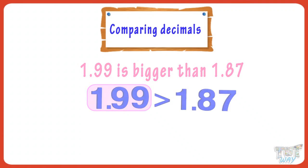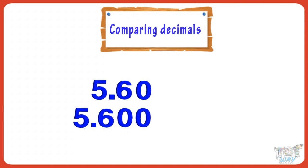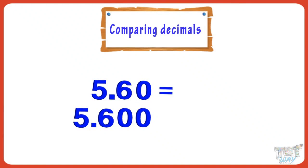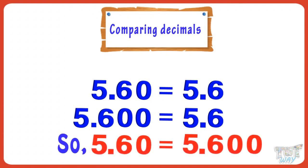Now, let's take one more example. Let's compare 5.60 and 5.600. First of all, remember that zeros in the rightmost places of decimal numbers have no value. So, 5.60 is the same as 5.6, and 5.600 is also the same as 5.6. So, both numbers are the same.